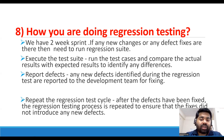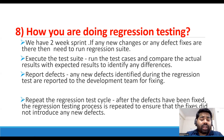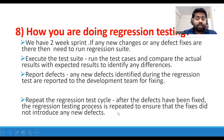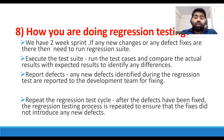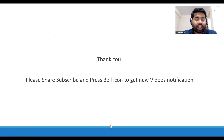Report defects: any new defect identified during regression testing is reported to the development team for fixing. Then repeat the regression test cycle after the defect has been fixed to ensure the fix did not introduce any new defects. The main agenda of regression testing is that nothing should break — no enhancement or bug fix should cause defect leakage to production.